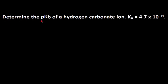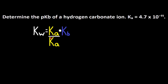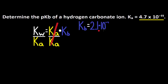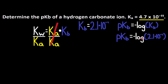Let's conquer this last problem. Determine the pKb of a hydrogen carbonate ion if Ka is equal to 4.7 times 10 to the negative 11. To get pKb we first need Kb. Using Kw is equal to Ka multiplied by Kb, we isolate Kb by dividing both sides by Ka, giving Kw divided by Ka is equal to Kb. Kw is 1.0 times 10 to the negative 14. Dividing by Ka, 4.7 times 10 to the negative 11, gives Kb is equal to 2.1 times 10 to the negative 4. Then pKb is equal to the negative log of Kb, so pKb is equal to the negative log of 2.1 times 10 to the negative 4. This gives pKb is equal to 3.67. We have two sig digs from Kb (2.1), and sig digs only apply to the decimal numbers for pKb and pKa, so that's why we have two decimal numbers.